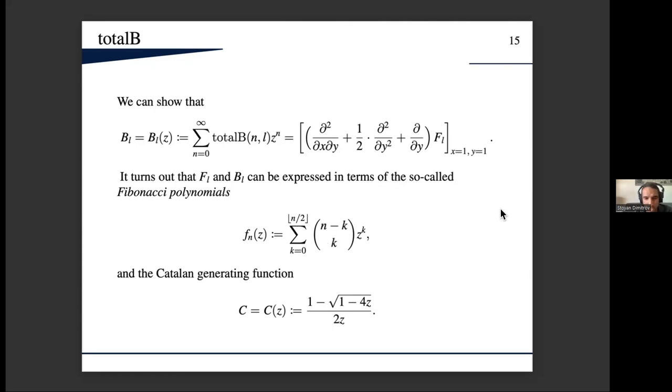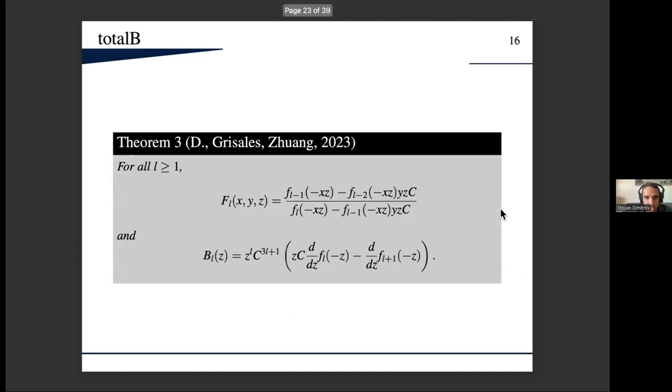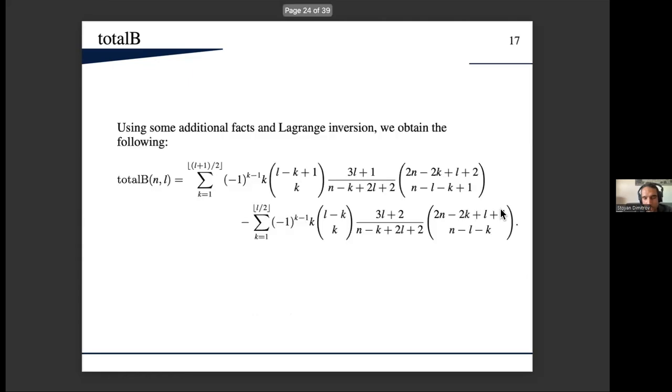Then interestingly, it turns out that both of these functions are related to so-called Fibonacci polynomials and the Catalan generating function. In particular, this is the result we got for these two generating functions, and we use that together with Lagrange inversion to obtain this summation formula for total B.